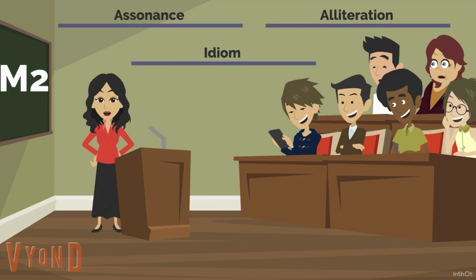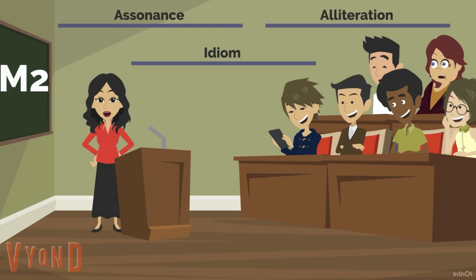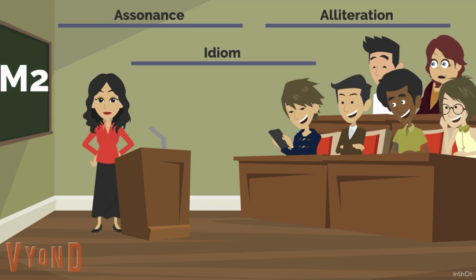But you don't have to sit down every time and think, 'Oh, I must use assonance and alliteration on this line, and I must use an idiom somewhere in my song.' Just practice writing a few out of context of a song and you will find they will come out in the flow.